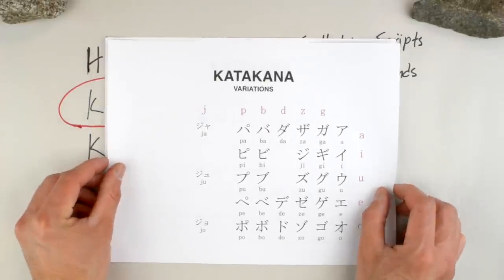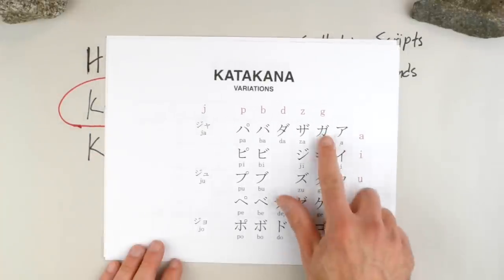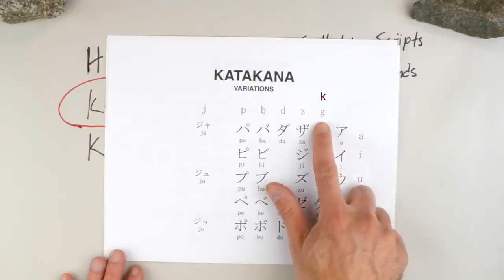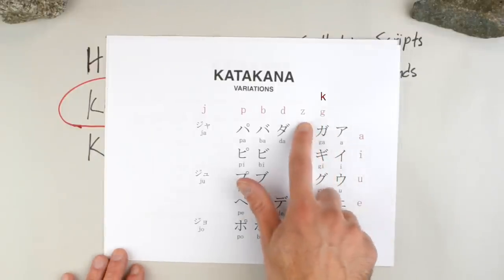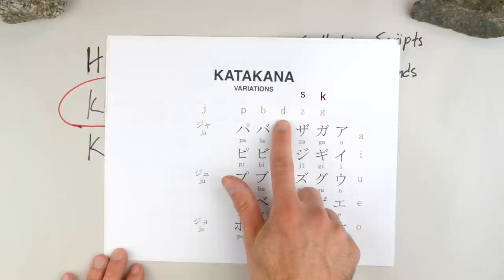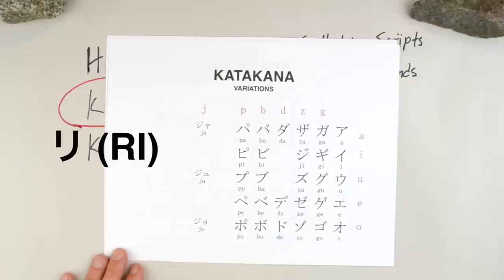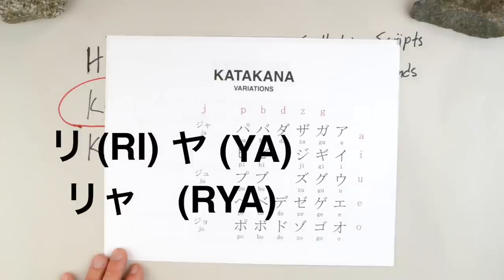For example, a small alteration to the character, such as placing two dots in the upper right-hand corner, changes the consonants: K to G, S to Z, T to D, and H to B. There are also combinations of multiple characters to create new sounds. For example, combining RI with YA creates the sound RYA instead of RIYA. Notice that when this happens, the second character is slightly smaller than the first.